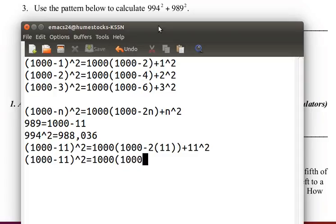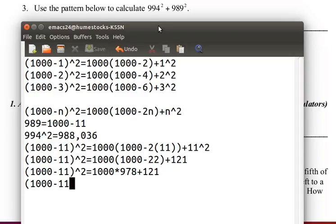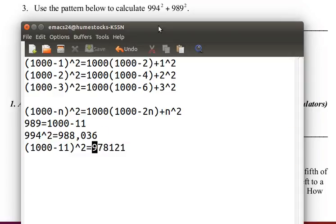1000 minus 2 times 11, which is 22, plus 11 squared, which is 121. So, 1000 times 1000 minus 22 is 978,000, plus 121, which is 978,121, and that is 989 squared.